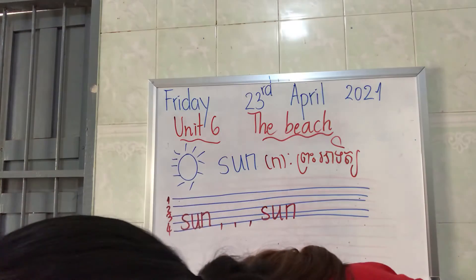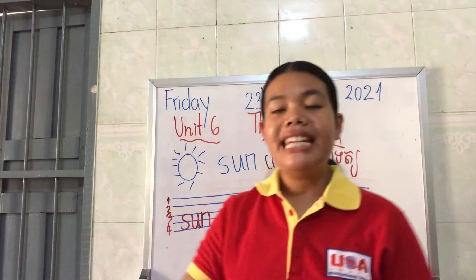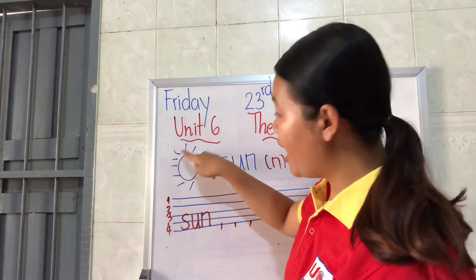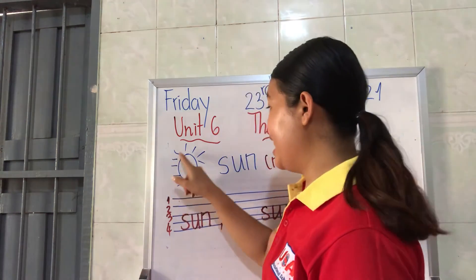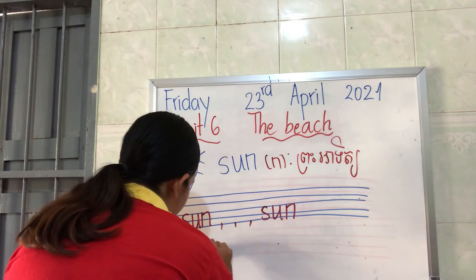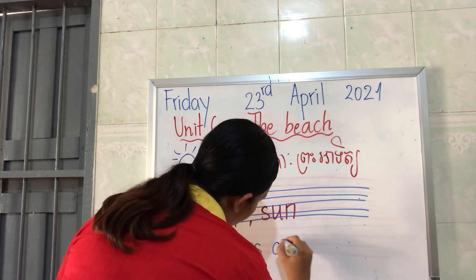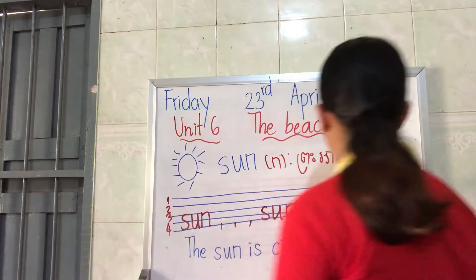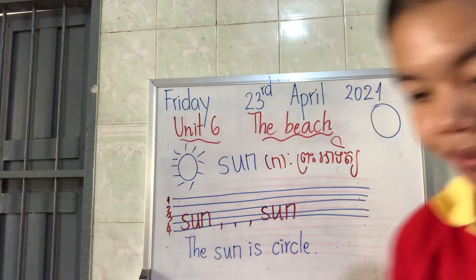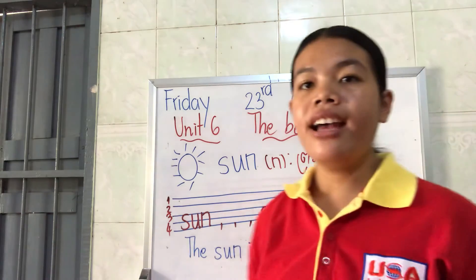And my sentence is about: 'The sun is circled.' Here — the sun is circled. Because it is circled here. So my sentence is: the sun is circled.